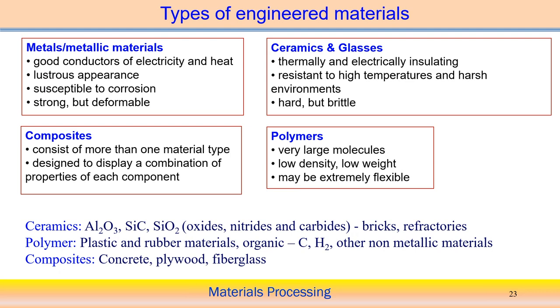Ceramics and glasses can resist high temperature and can be utilized in frost environments, so they are not associated with any kind of corrosion. However, the mechanical properties mean they are very brittle as well as hard — ductility is almost zero in case of ceramics and glasses. Composite material is formed by combining more than one material type, targeting some specific properties, where the ratio can be controlled to achieve intermediate properties.